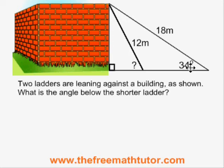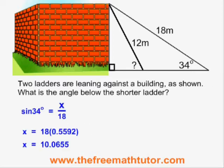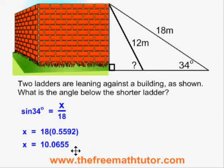Using the SOH formula, sin of 34 degrees is equal to opposite x over hypotenuse 18. We end up with the height of the building being 10.0655 meters, rounded off to four decimal places.